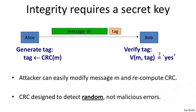Integrity really does require a shared key between Alice and Bob. A common mistake is trying to provide integrity without a shared key. Consider CRC — cyclic redundancy check — a classic checksum algorithm designed to detect random errors in messages. If instead of using a key to generate the tag, Alice uses a CRC algorithm, which is keyless, she computes a CRC tag and appends it to the message.